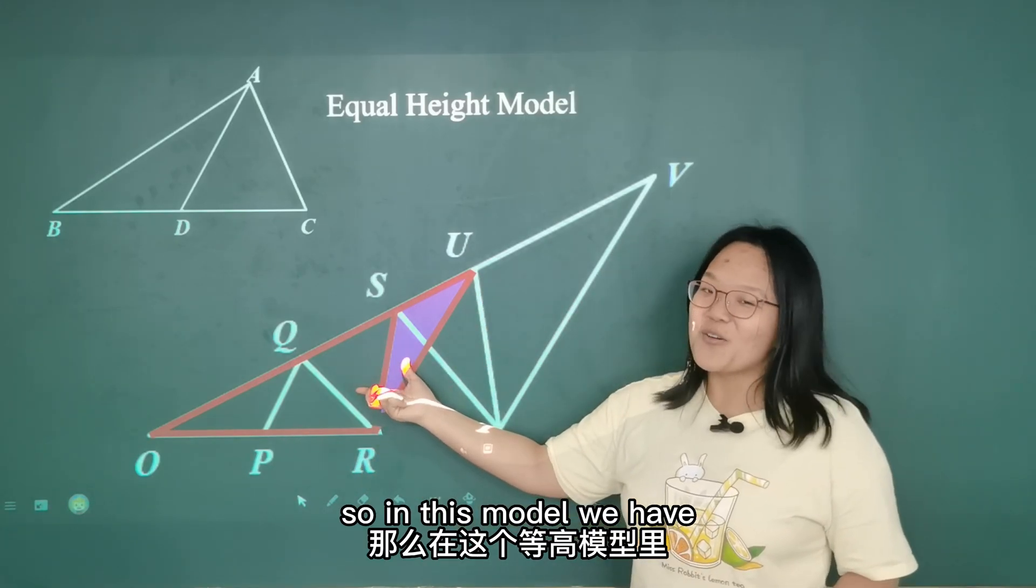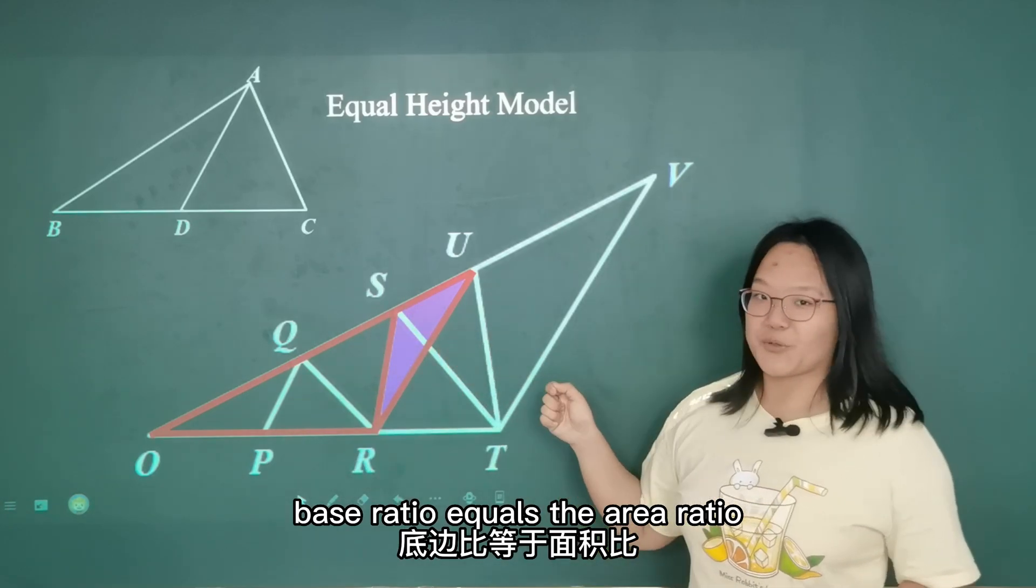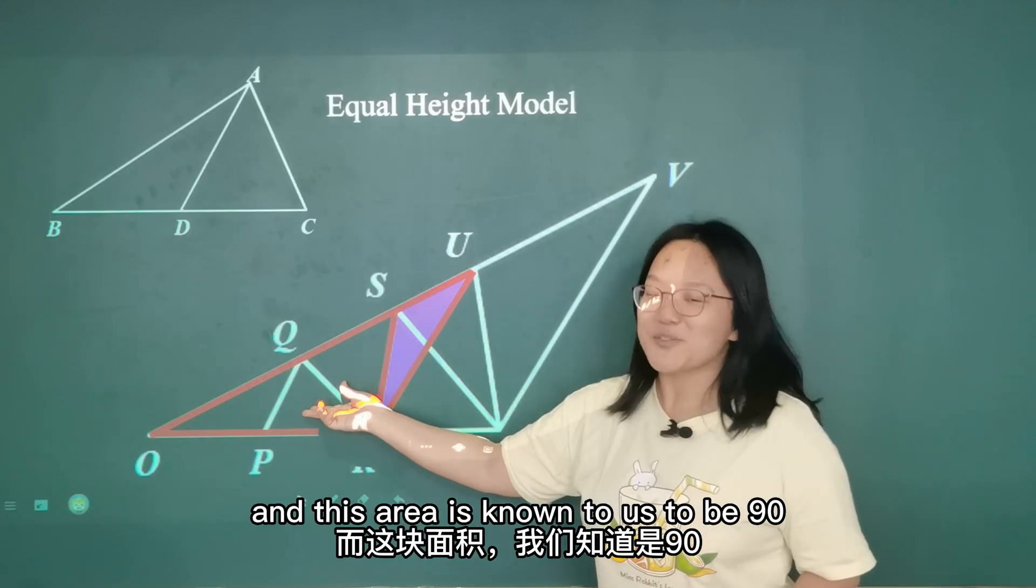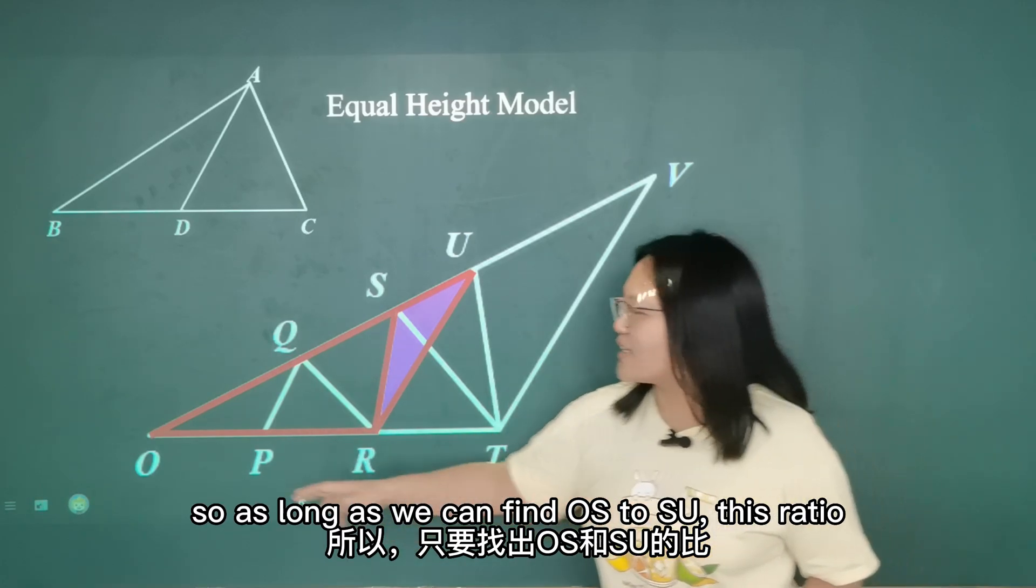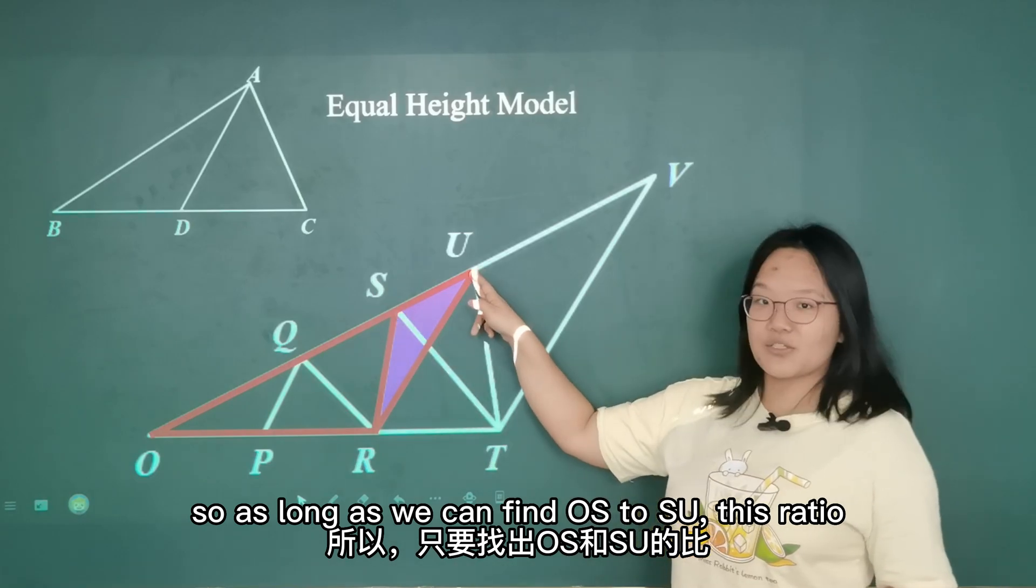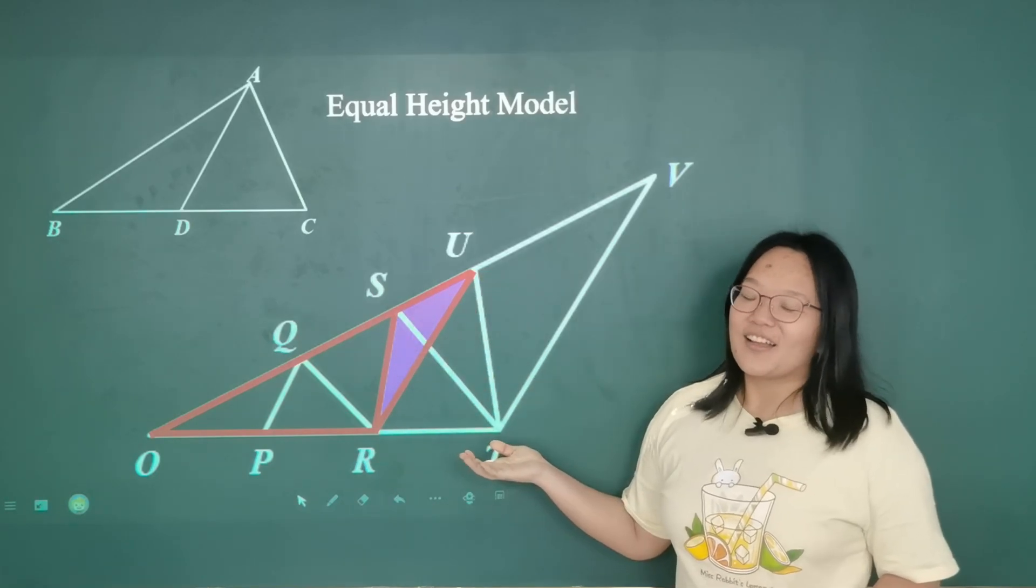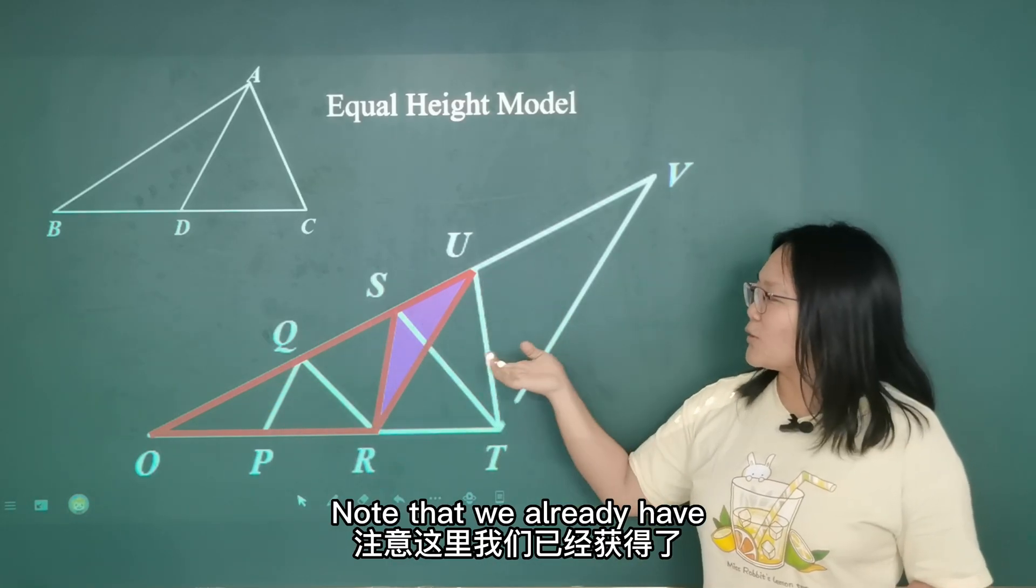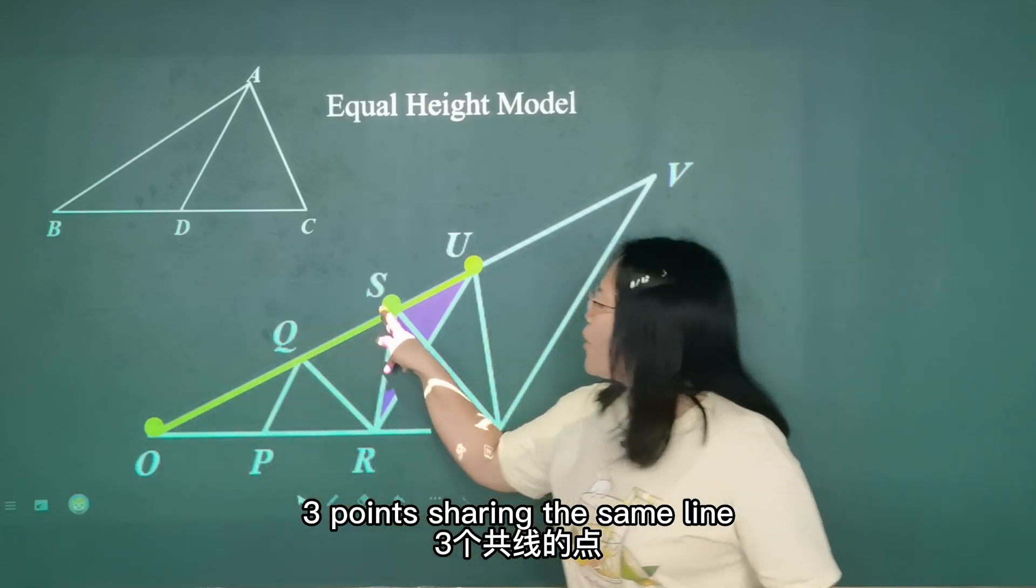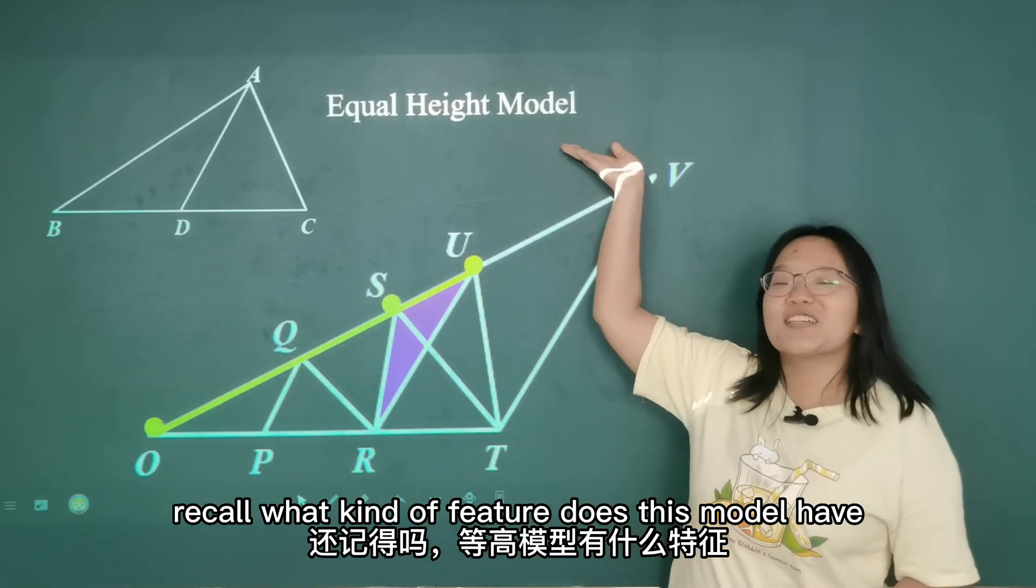So in this model, we have base ratio equals the area ratio. And this area is known to us to be 90. So as long as we can find OSU this ratio, this area is solved. But how do we find this base ratio then? Note that we already have three points sharing the same line. Recall what kind of feature does this model have? It's called 3 to 1.